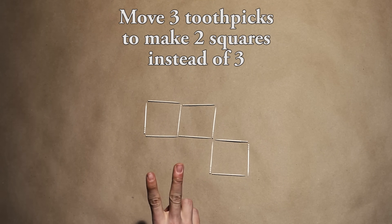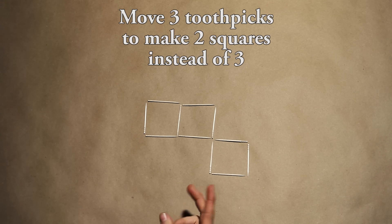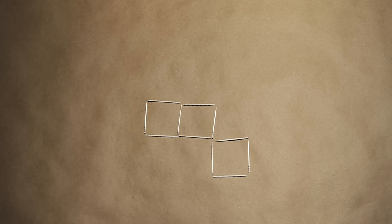Level two, so we got eleven toothpicks making three squares. Your job is to move three toothpicks to make two squares. Good luck. Pause the video and give it a shot. The solution once again will be at the end.